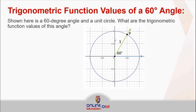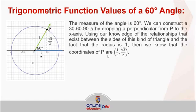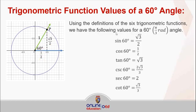For the 60-degree angle intersecting the unit circle, using the same idea we drop a perpendicular from P to the x-axis, which gives us a right angle. The remaining angle is 30 degrees, forming a 30-60-90 triangle again where the hypotenuse is 1. So the shorter leg is half the hypotenuse, and the other leg is half the hypotenuse times √3. It's easy to get the coordinates of P, and we can then get the trigonometric function values by plugging in those values.